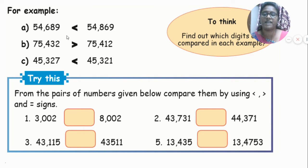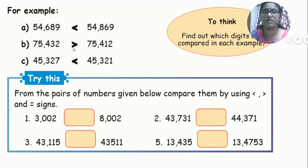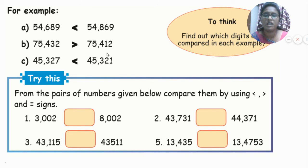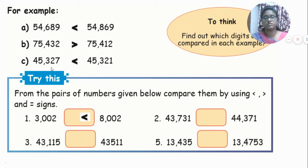For example: 54,689 — the symbol given is lesser than — so 54,689 is lesser than 54,869. Next: 75,432 — the symbol given is greater than — so 75,432 is greater than 75,412. Next: 45,327 — the symbol given is lesser than — so 45,327 is lesser than 45,321.